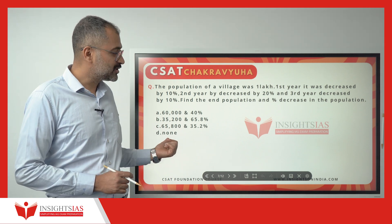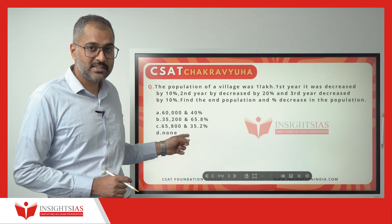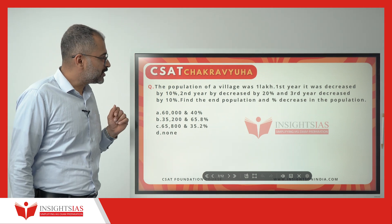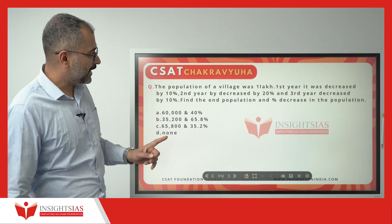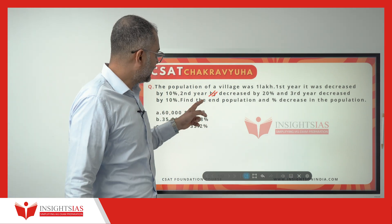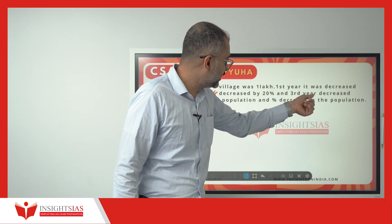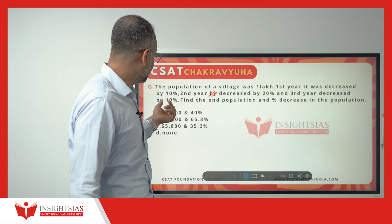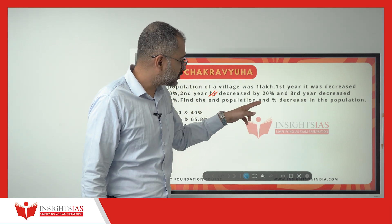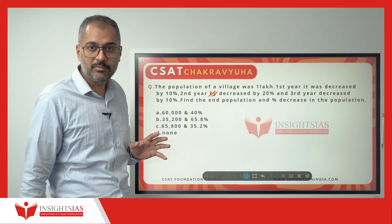In the last video, this was the homework question I asked. I will explain this question in a very simple way. The population of a village was 1 lakh. First year it was decreased by 10%, second year decreased by 20%, and third year decreased by 10%. Find the end population and also find the percentage decrease in the population.